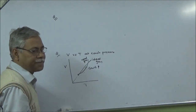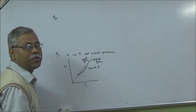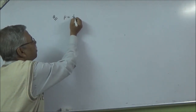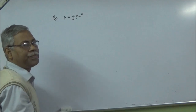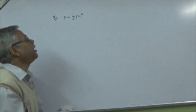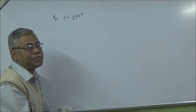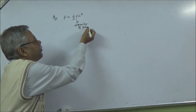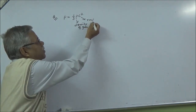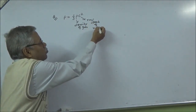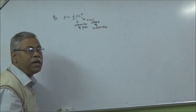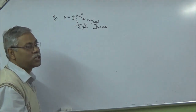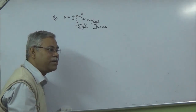Find an expression for the pressure of an ideal gas. The pressure of an ideal gas is given by P = 1/3 ρC², where ρ is the density of the gas and C is the RMS speed of its molecules. This is a very important formula.